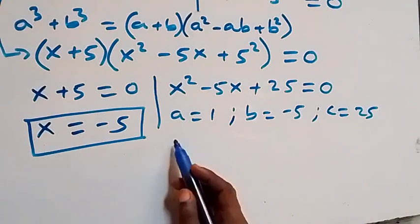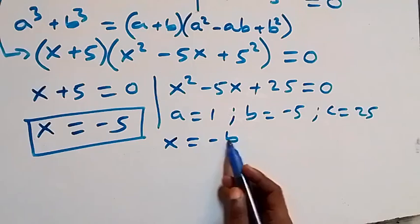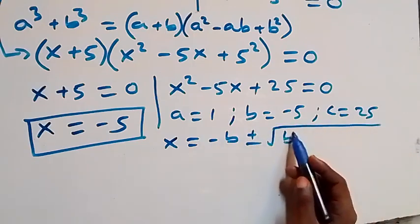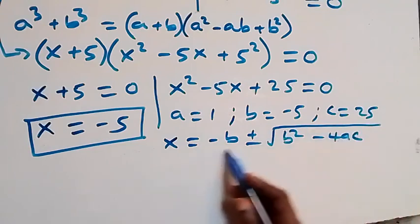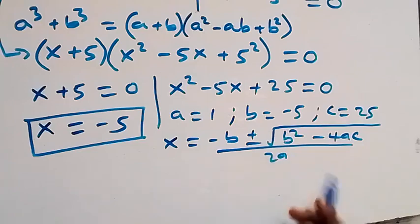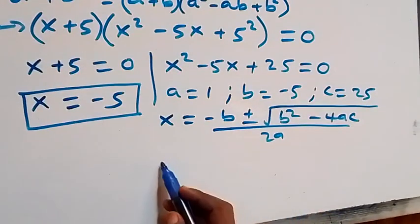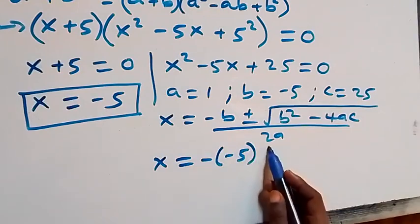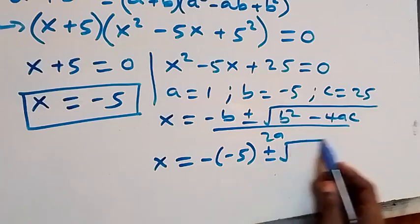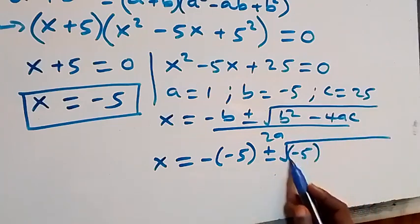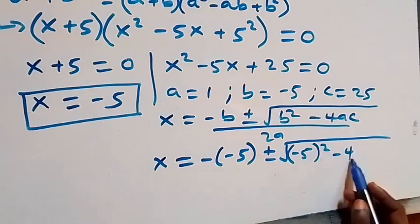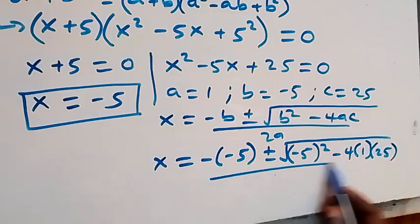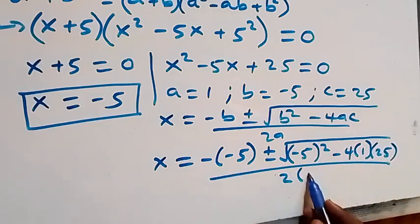Applying the quadratic formula x equals minus b plus or minus square root of b squared minus 4ac, over 2a, we substitute to get x equals minus negative 5 plus or minus square root of negative 5 squared minus 4 times 1 times 25, over 2 times 1.